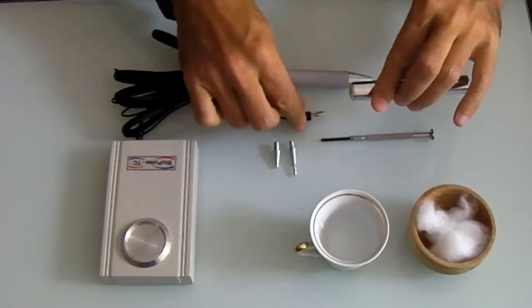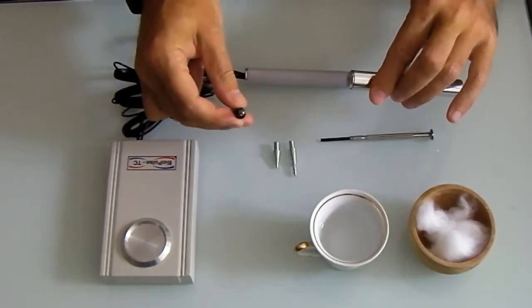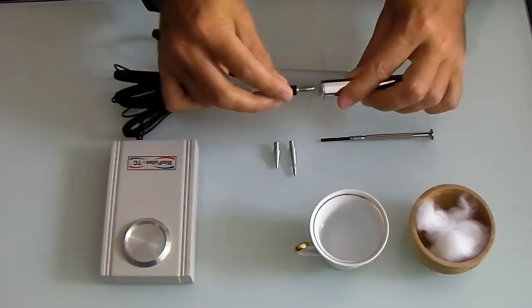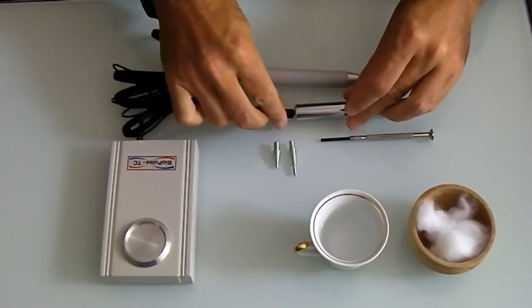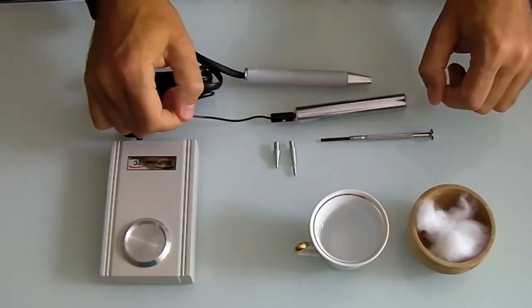The first thing is we take the passive electrode and connect it to the detecting probe. There is a small hole in the passive electrode and you can plug the jack, the banana jack, into the hole.